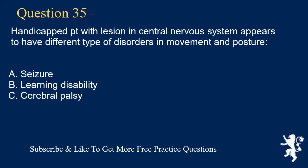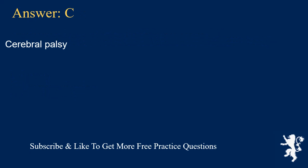Question 35. A handicapped patient with a lesion in the central nervous system appears to have different types of disorders in movement and posture. A. Seizure, B. Learning disability, C. Cerebral palsy. Answer: C. Cerebral palsy.